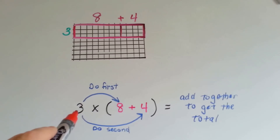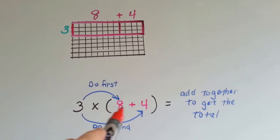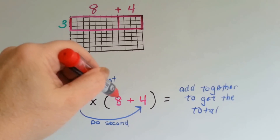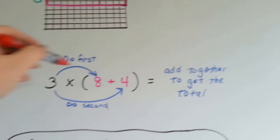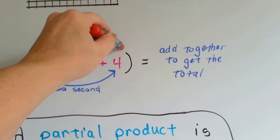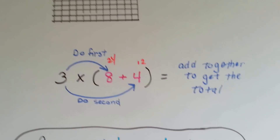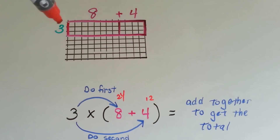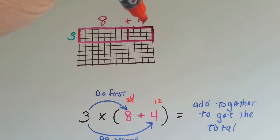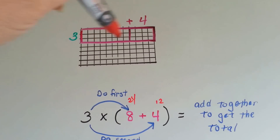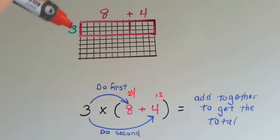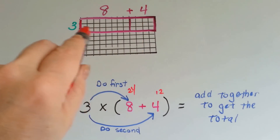It would be written like this: 3 times, then a parenthesis, 8 plus 4, and then another parenthesis and then the equal sign. You would do 3 times 8 and you can make a little note to yourself that that's 24. And then we would do 3 times 4 and then you would add them and put the answer there. If you had 8 threes coming across here and you had 4 threes, you'd have 12 threes — the same thing as 3 times 8 plus 3 times 4. You get 36 boxes.